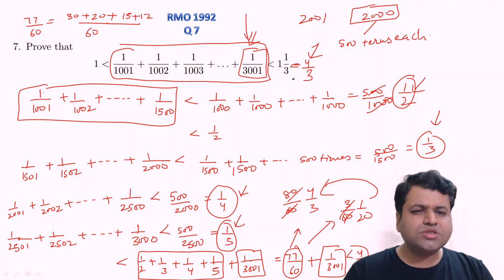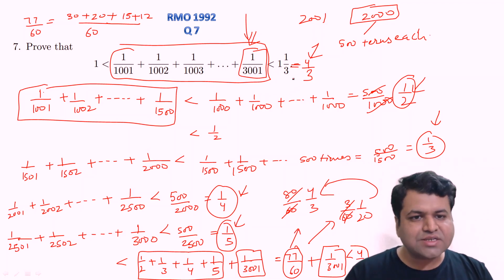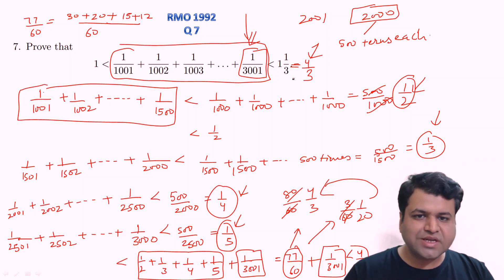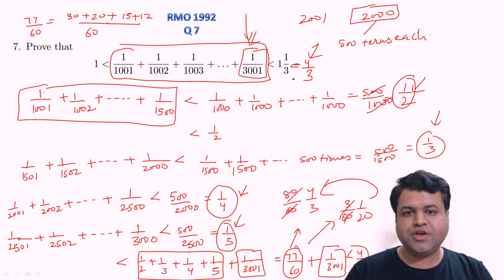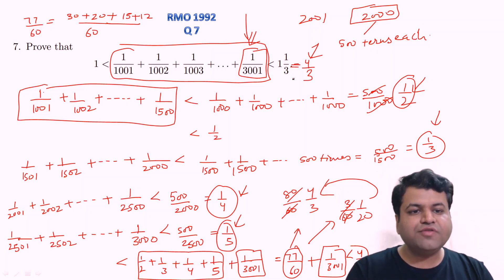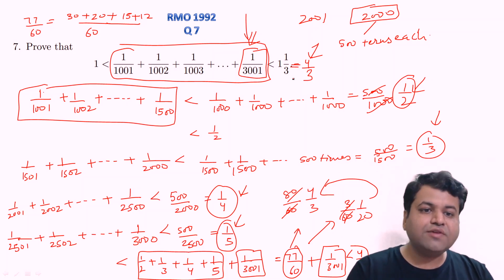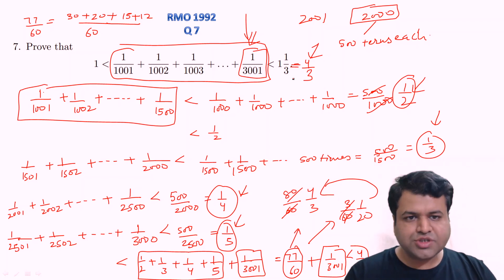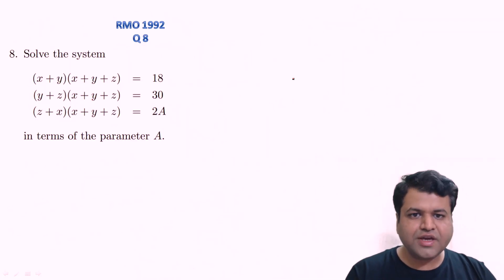That was a good question as far as RMO level is concerned. This question has two parts: prove the sum is greater than 1, and prove it is less than 4/3. Now let's move to question number 8 of year 1992.